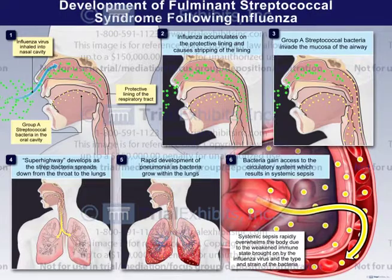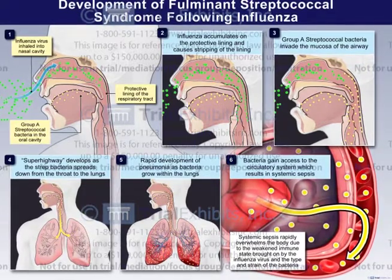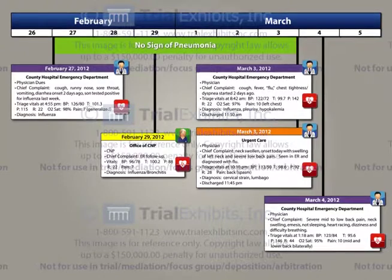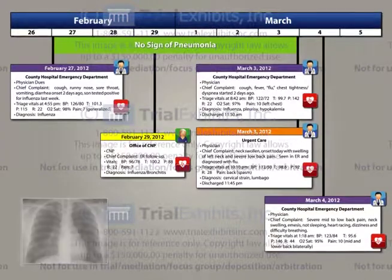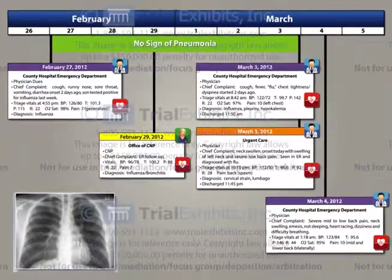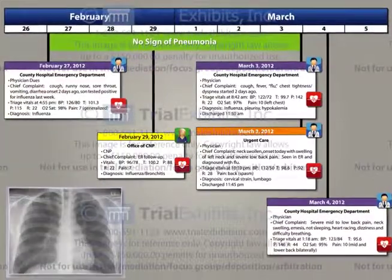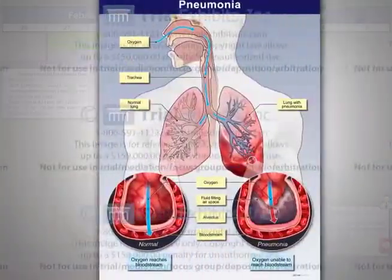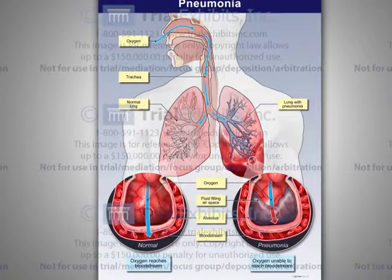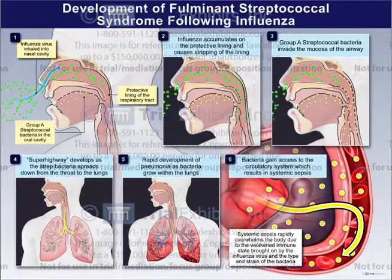Our task was to educate the lay jury on the facts of the case. This included the development of a timeline showing the substantial care administered to this patient, a presentation of chest films showing that no pneumonia was present prior to the final events, and the creation of a series of medical illustrations to both explain pneumonia and the progression of fulminant streptococcal syndrome following influenza.